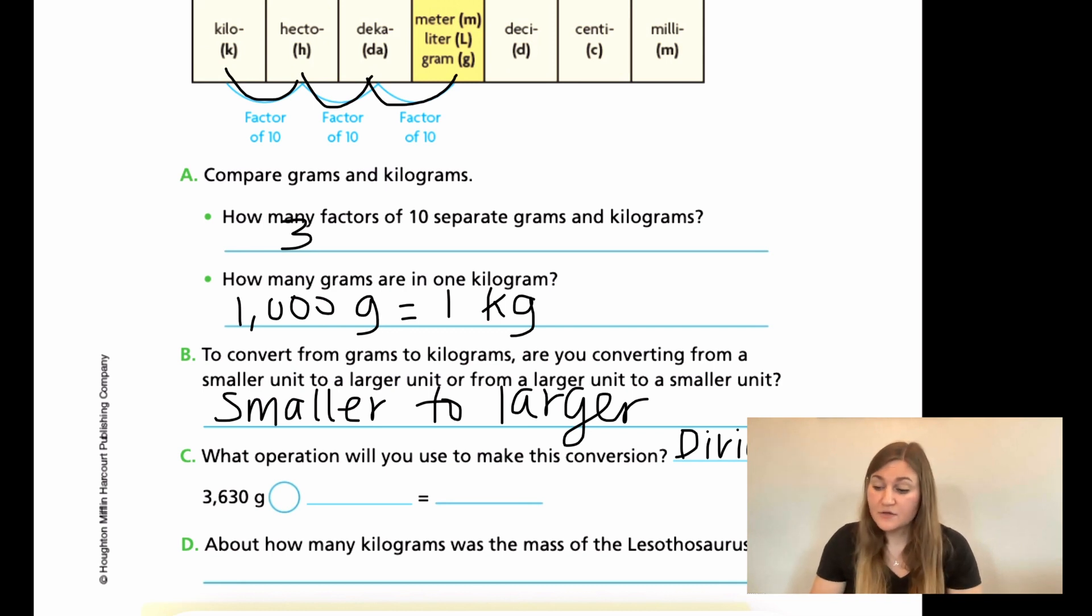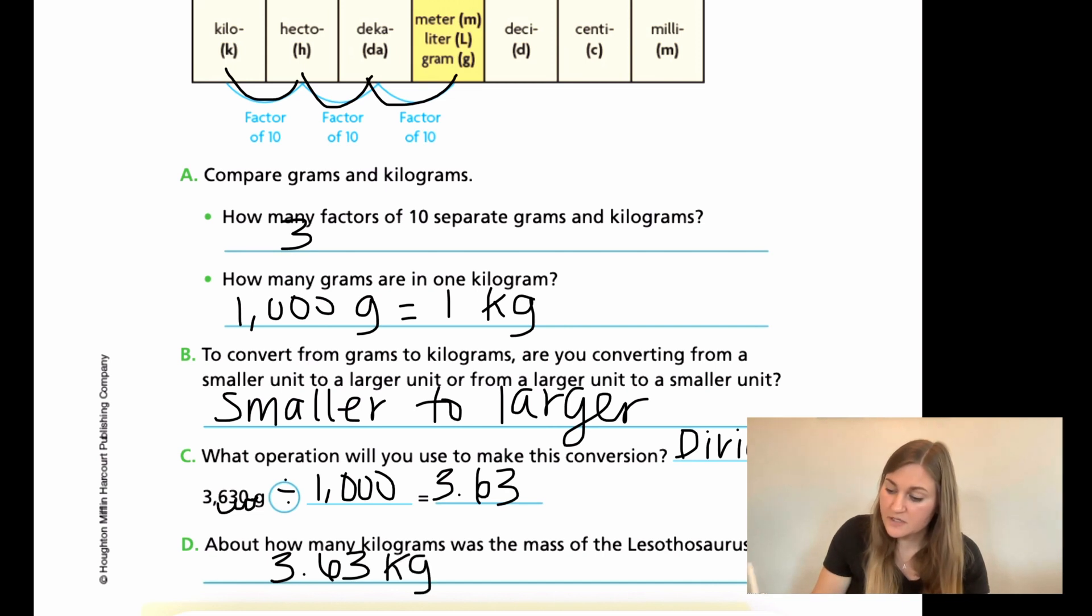So then underneath it has our problem. So it says 3,630 grams, and we are going to be dividing. And we found out that we are dividing by 1,000 since there's 1,000 grams per kilogram. Now we need to figure out what the answer is. So remember when we multiply or divide by powers of 10, especially with the metric conversions, we're going to be working with those decimals and we're going to be moving the decimal in the same hops, just like we did from finding grams to kilograms. So we moved our measurement from gram to kilogram. We made three hops to the left, which means we're going to do the same thing in our number. We're going to start with our decimal point at the end of the zero, and we're going to move it to the left three times, which means our decimal point is now where our comma was. So now it reads 3.63. So in D it says how many kilograms was the mass of the Lesothosaurus. It was 3.63. And we found kilograms. We're going to write kg for kilograms.